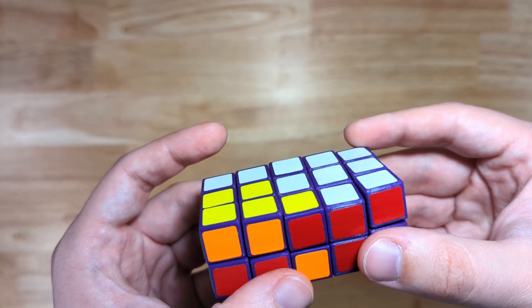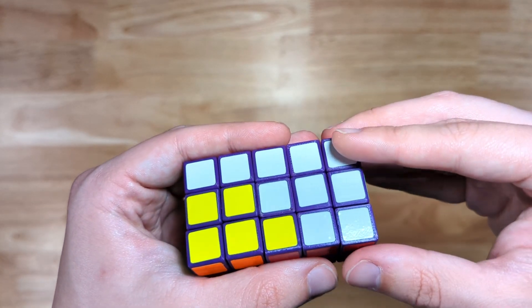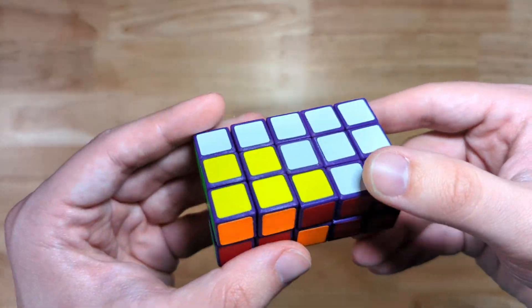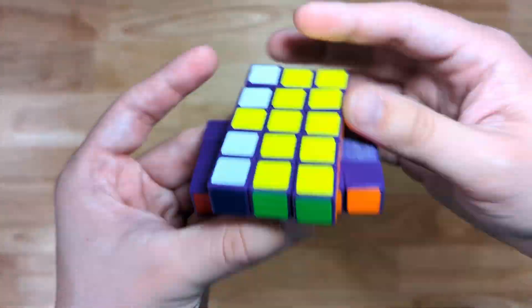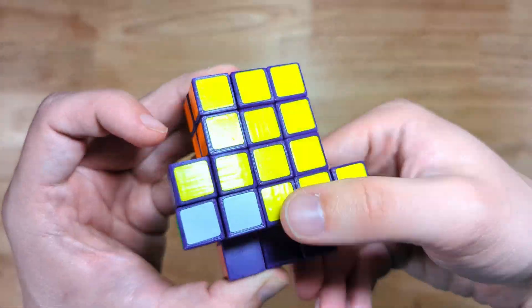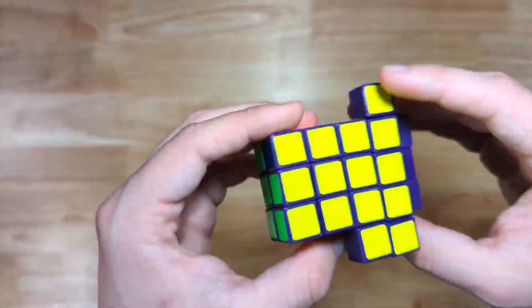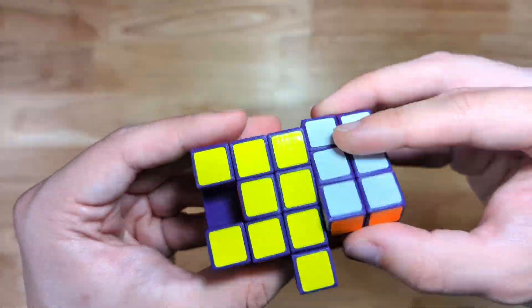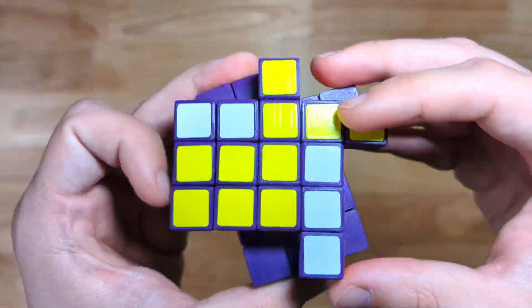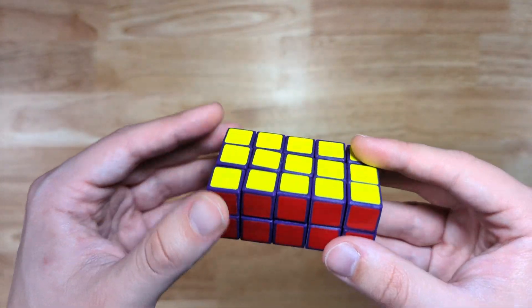Okay, cool. And, now, all I have to do is solve this like a 3x3x2, because I've reduced it as such. I'm no longer going to be making these outer layer turns. And, there we are. The 2x3x5 is solved.